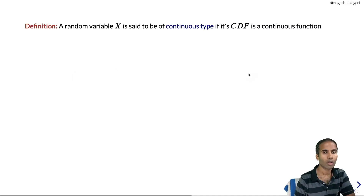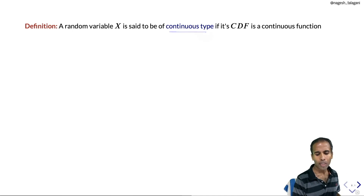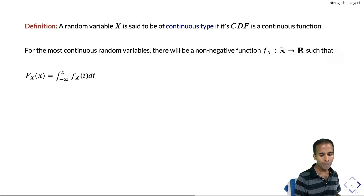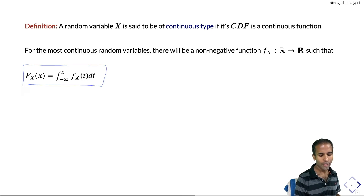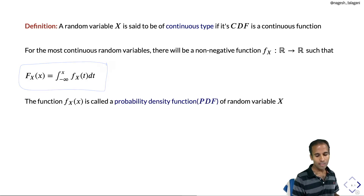Now let me give a definition for continuous type random variable. A random variable X is said to be of continuous type if its CDF is a continuous function. For most continuous type random variables, there will be a non-negative function f such that the CDF F equals the integral of f over (−∞, x]: F(x) = ∫_{−∞}^{x} f(t) dt. This function f is called the probability density function, or PDF.